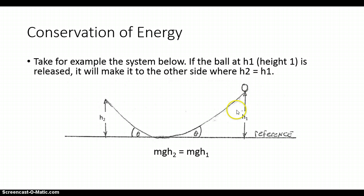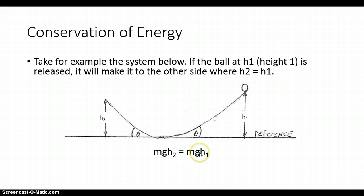If the system is conservative, when the ball is released from this side, the ball will reach the exact same height on the other side. So H2 is equal to H1 — in a case like that, we say the system is conservative. We can use the gravitational potential energy equation from the prior slide to represent this scenario and show that it's conservative. Initially, all the energy is potential energy, and when the ball gets to the opposite side, the potential energy there will be equal to MGH2. If this is a conservative system, H2 must equal H1.